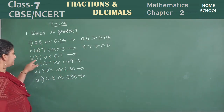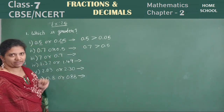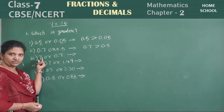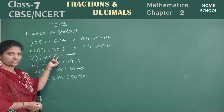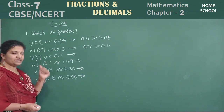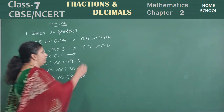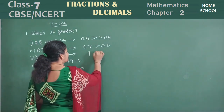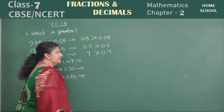Now, next: seven or point seven? Don't be confused here — only seven. Only seven you have to see this value, children. Is seven greater or zero greater? Seven is greater, right. Therefore, seven is greater than zero point seven.